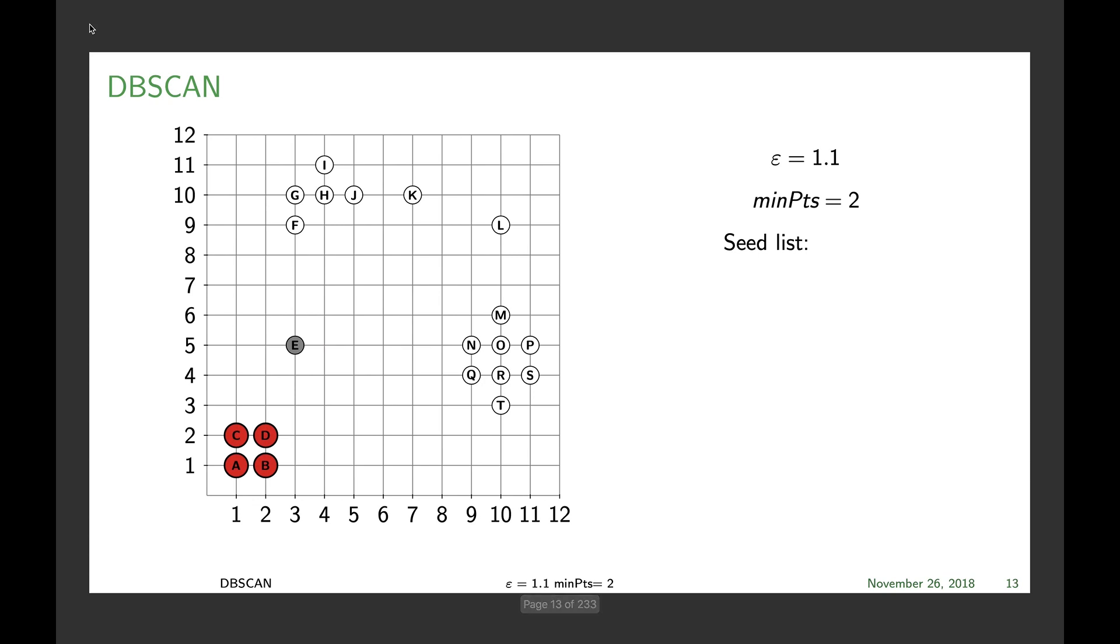We jump onto E which ends up being noise. We make F, we add F as a new cluster because it has none of the previous points in epsilon range, then add G to our seed list, check G, add H and then check J and I.